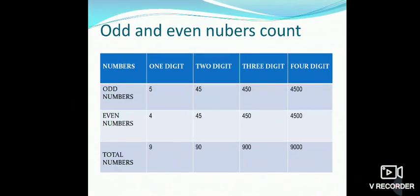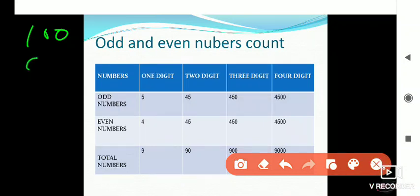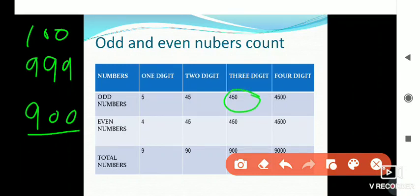Same for three-digit numbers. The smallest three-digit number is 100 and the greatest is 999. Total 900 numbers are present between 100 and 999. Out of these 900 numbers, 450 are even and 450 are odd. The smallest three-digit even number is 100 and the smallest three-digit odd number is 101.